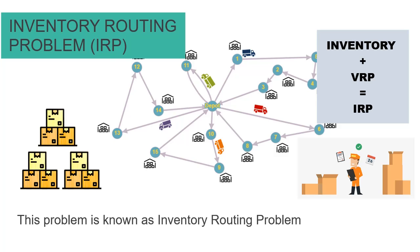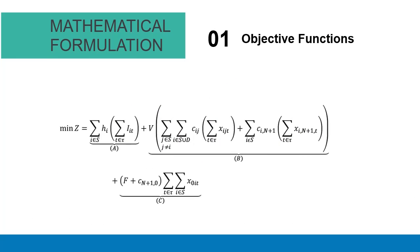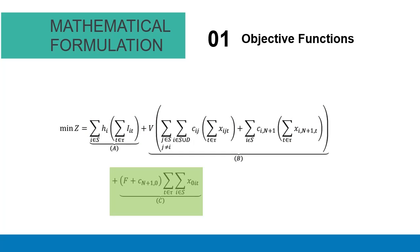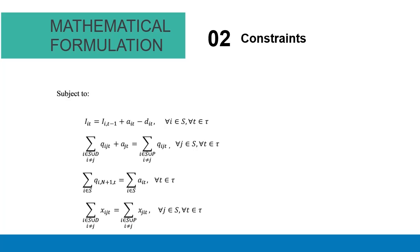The combination of vehicle routing and inventory management is known as the inventory routing problem. This is another problem considered in our research. Mathematically, the problem can be modeled as a mixed integer linear programming. For example, this is the formulation for solving the inventory routing problem. The aim is to minimize the inventory costs at the customer's site, variable travel costs, and fixed vehicle costs, which are subject to several constraints.